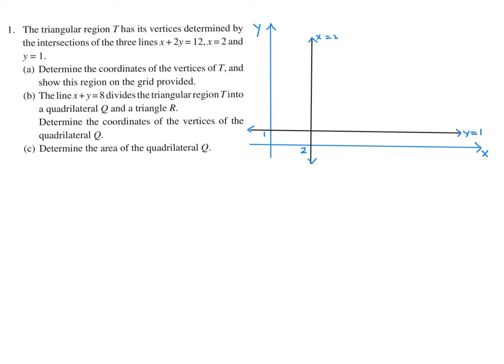The third line is x plus 2y equals 12. We need two points to draw it, so we find the intercepts. When y is 0, x is 12. When x is 0, y is 6. We join those two points. It won't be perfectly drawn to scale, but this is the triangular region that these lines create.